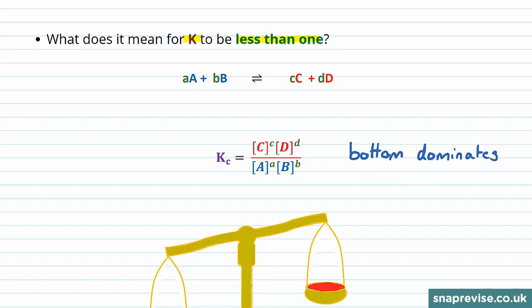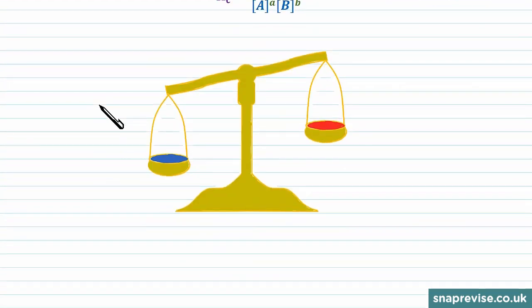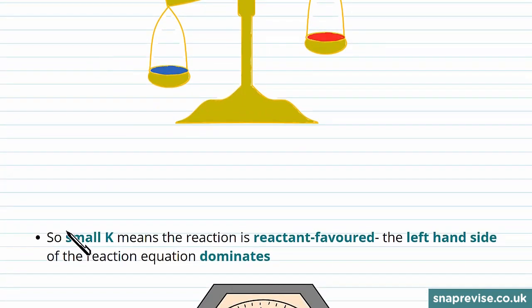This means that the equilibrium must lie further towards the reactant side of the equation. So if a reaction has a small K value less than 1, this means it's reactant favored, and the left-hand side of the equilibrium equation dominates.